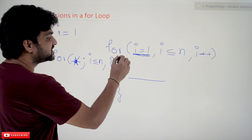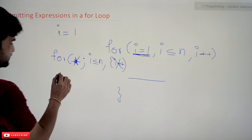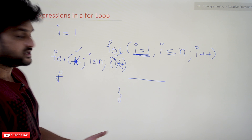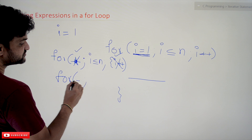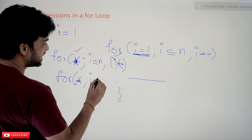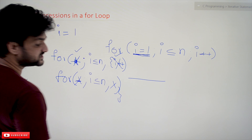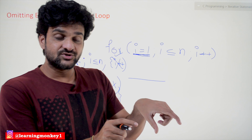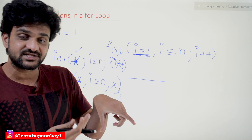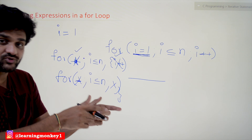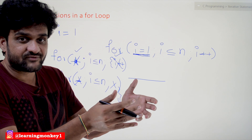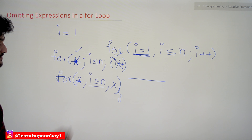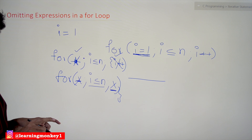If you want to omit the increment part as well, can that be done? Yes, it can. For example, if we want to omit both initialization and incrementation, the for loop will look like: for(; i <= n; ). The semicolons are very important — they must be there. The semicolons indicate to the for loop that those expressions have been omitted. So only the control expression i <= n remains inside the for loop parentheses.